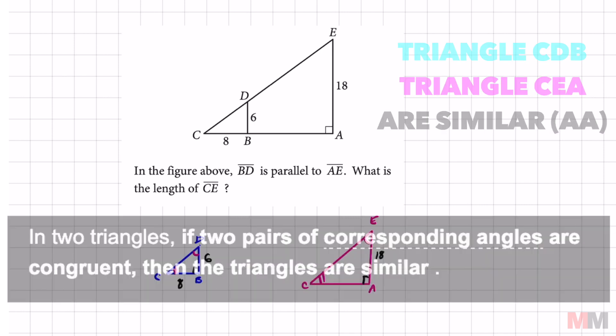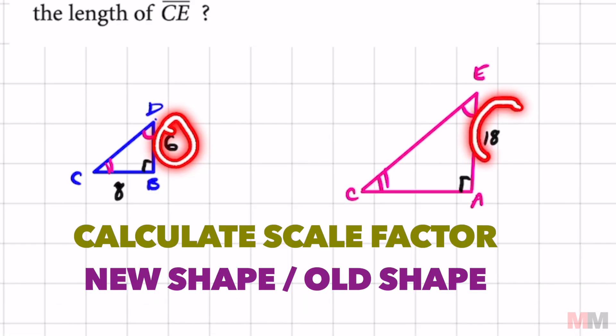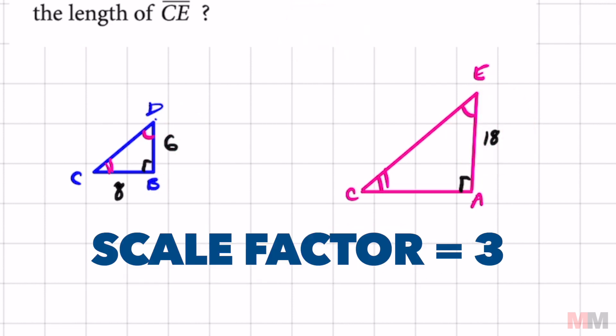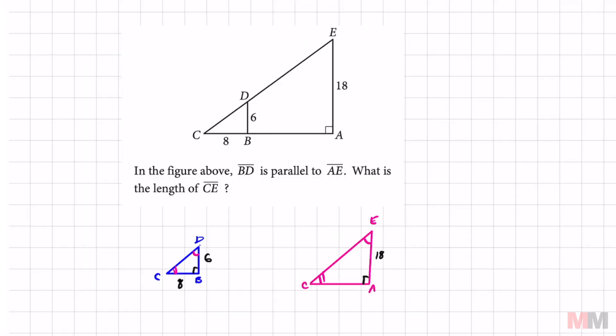Second place you want to look are the dimensions and we want to compare 6 to 18. Look at the scale factor of that. It's easy to find that out. All we got to do is 18 divided by 6. So that's got a scale factor of 3. Keep that in mind.